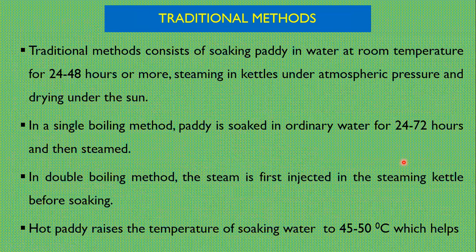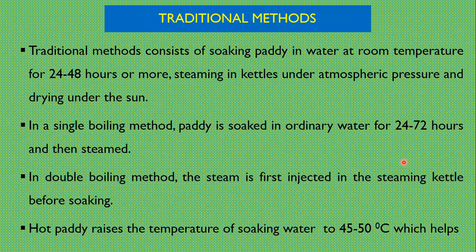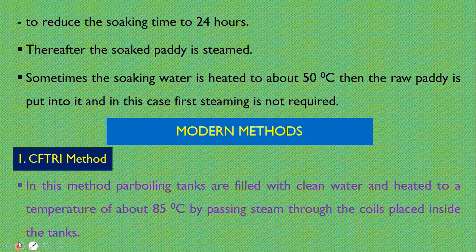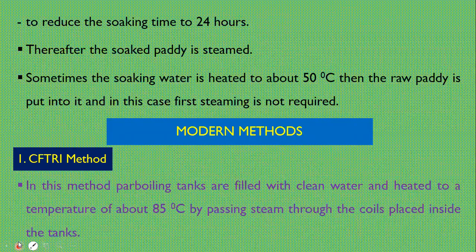Traditional methods consist of soaking paddy in water at room temperature for 24 to 48 hours or more, steaming at temperatures under atmospheric pressure, and drying under the sun. In the single boiling method, paddy is soaked in ordinary water for 24 to 72 hours and then steamed. In the double boiling method, steam is first injected into the steaming kettle before soaking. Hot paddy raises the temperature of soaking water to 45 to 50 degrees Celsius, which helps reduce soaking time to 24 hours. Sometimes the soaking water is heated to about 50 degrees Celsius before the raw paddy is put into it, in which case hot steam is not required.